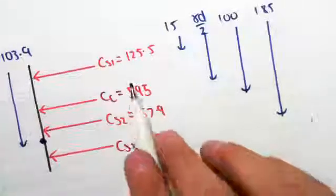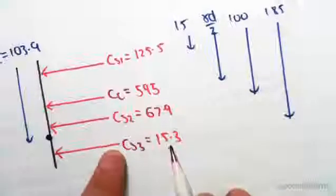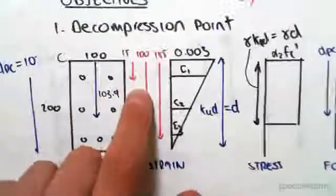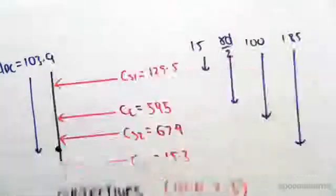So we have the compression in steel one, compression in steel two, compression in steel three. We know that those layers were at 15, 100 and 185, 15, 100, 185, or each of those layers from the top.